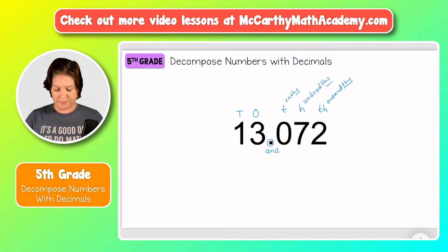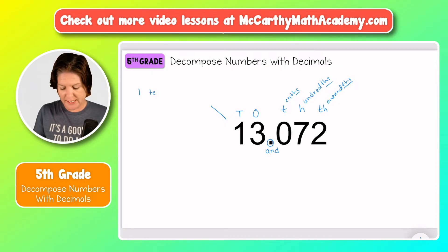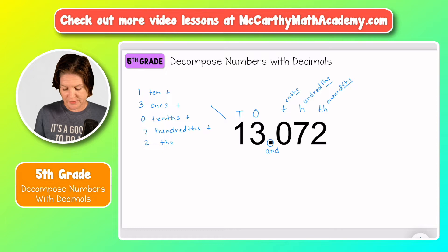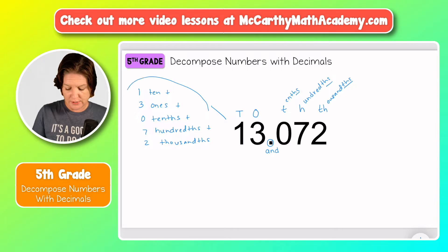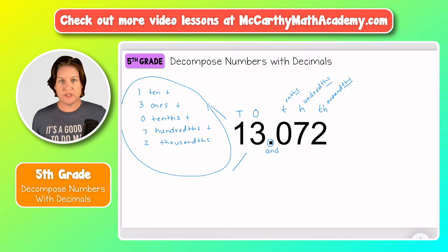Now to break down this number, one way that we could do it would be to isolate each digit. We could say we have one ten, plus three ones, plus zero tenths, plus seven hundredths, plus two thousandths. That would be one way to break down or decompose the number — and you could write this all out. That's the common way: to isolate each digit.